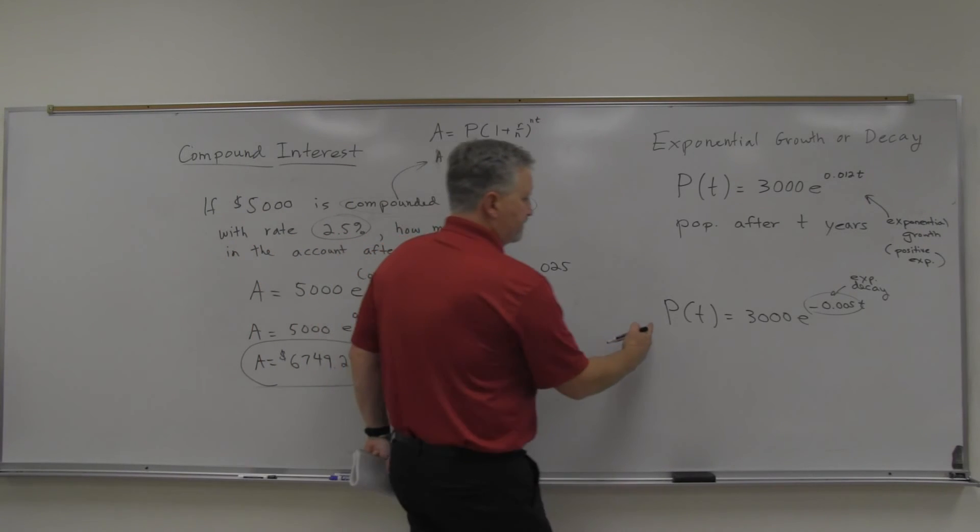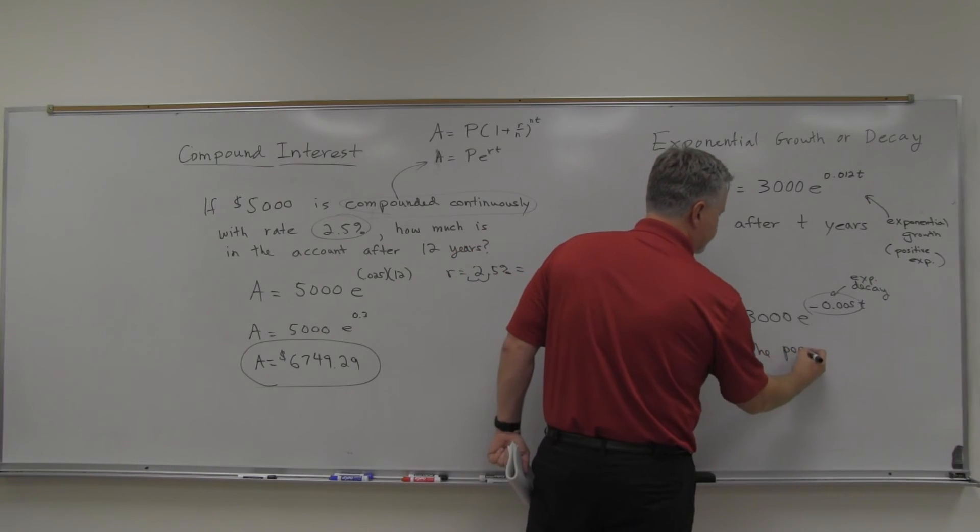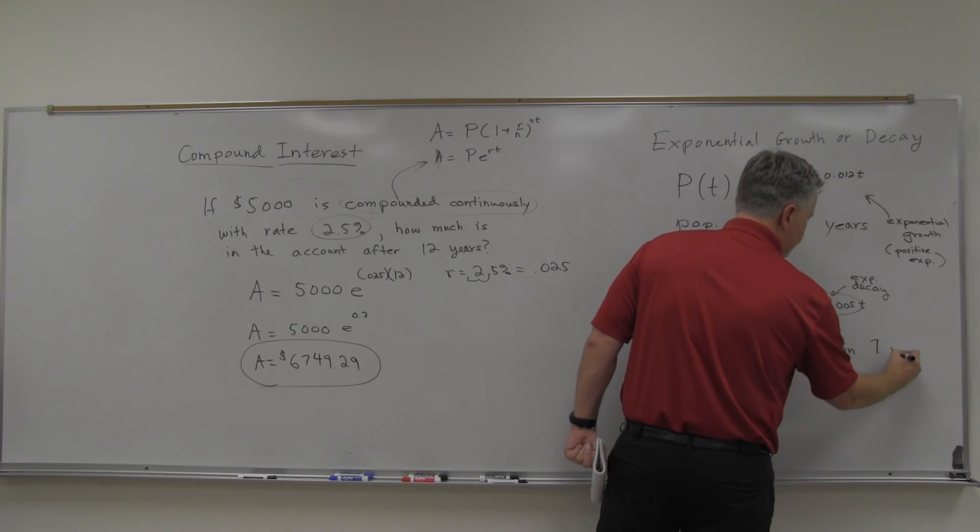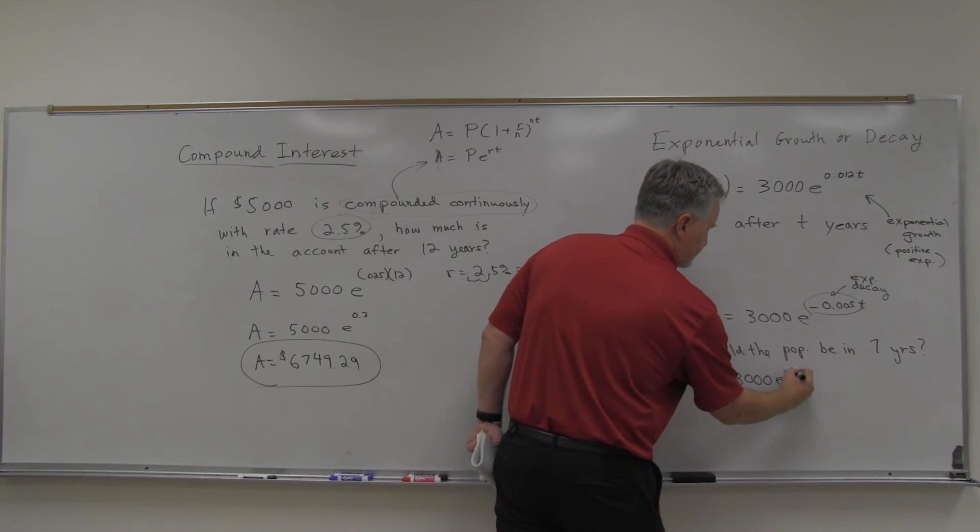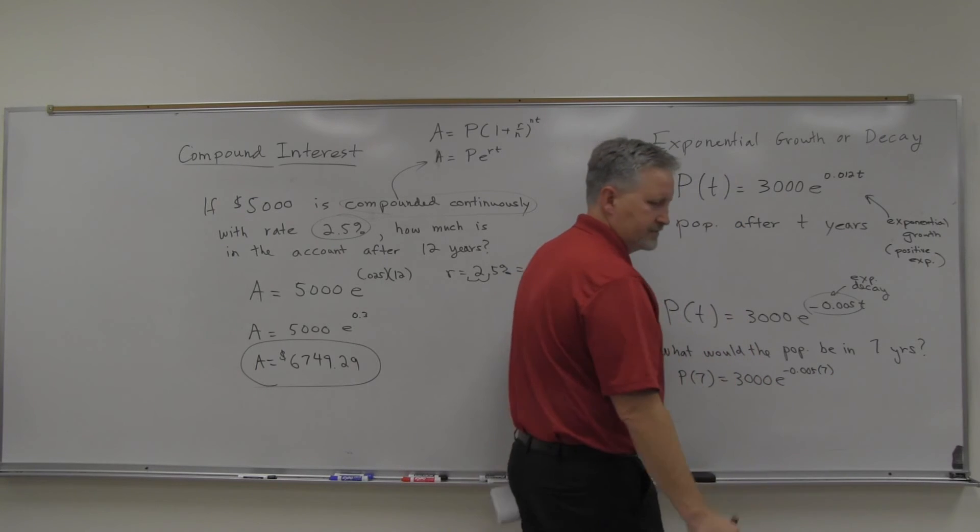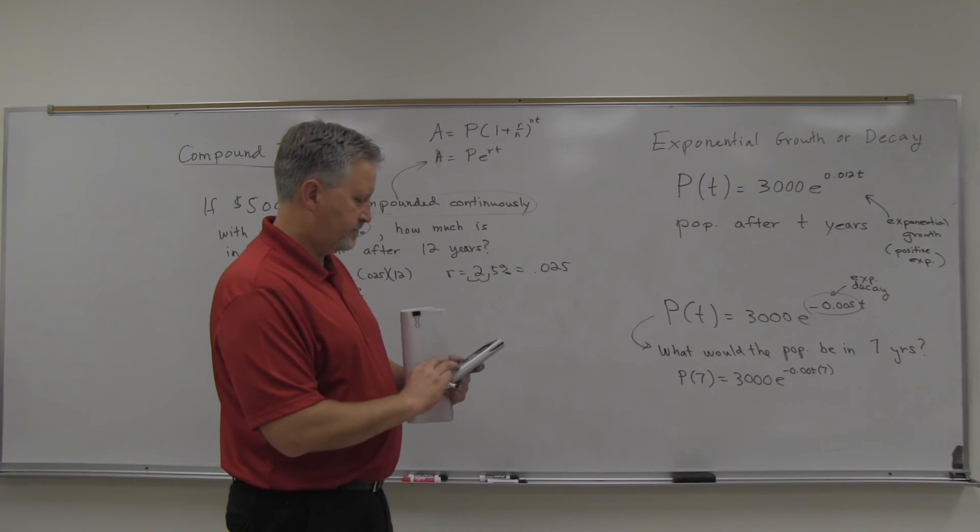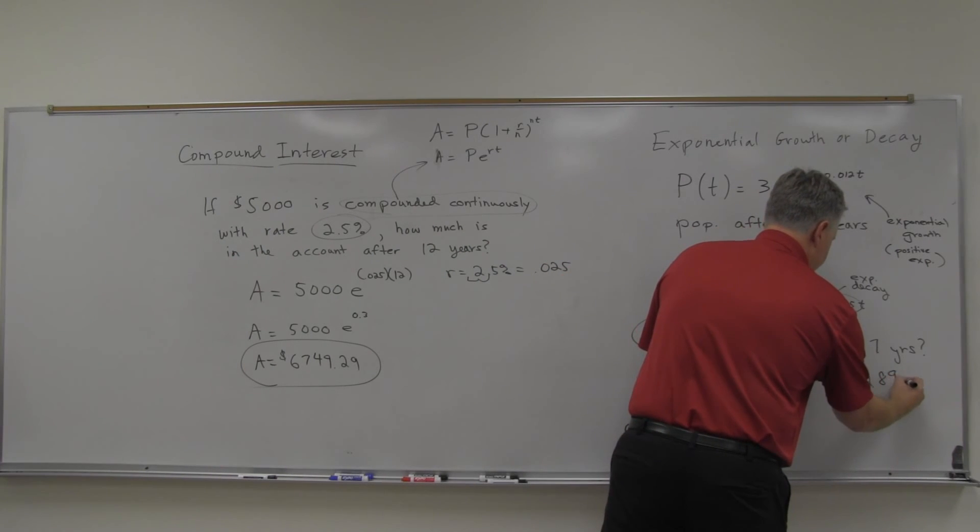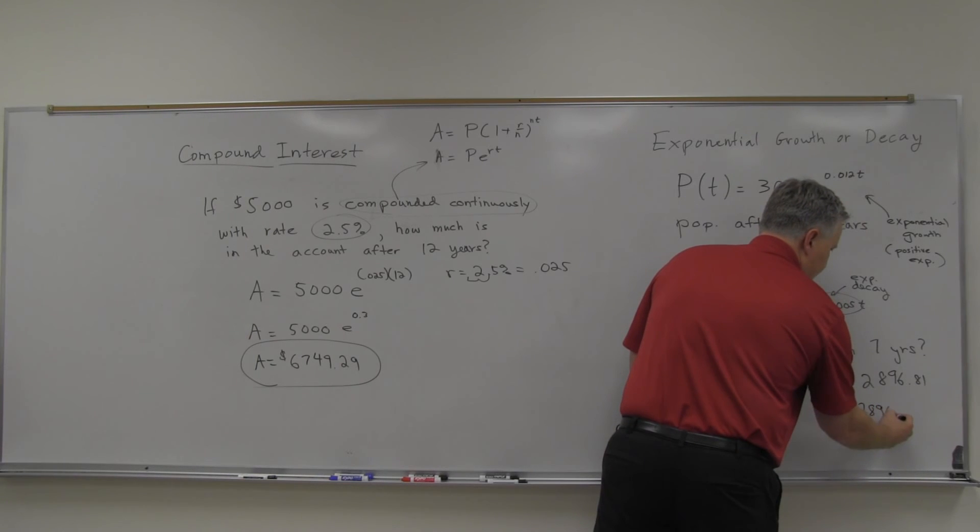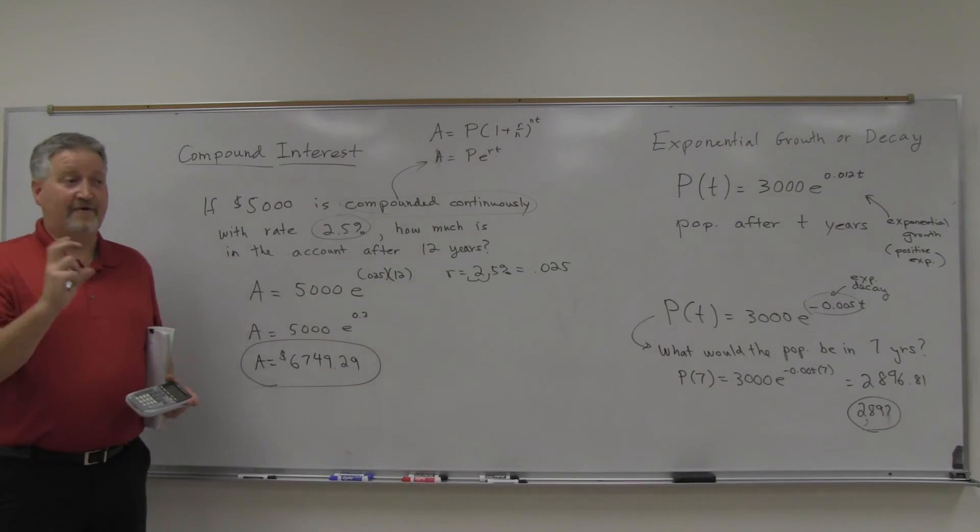Anyway, what they have you do. So let's say, for this one, what would the population be in seven years? That would be P7, 3000 times E to the negative 0.005 times 7, 0.035. So it's 3,000 times E to the negative 0.035, right? 2,896.81, and so round that off. And so that confirms there it is decreasing. I didn't mention that. What did this population start out at? At times zero? 3,000. It'd be 3,000, right.